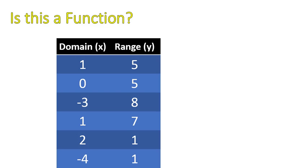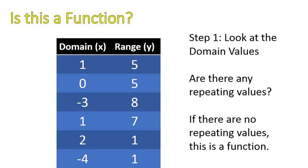Let's look at another table. This one here, a little bit more blue. This one has the input values of 1, 0, negative 3, 1, 2, and negative 4. Notice that I have a repeating value. If I input the value of 1 for my domain, I might get 5, or I might get 7. So this value here, where it's repeating, makes this not a function. And that's an important distinction to make there. That's an important distinction, that it is not a function because of that.